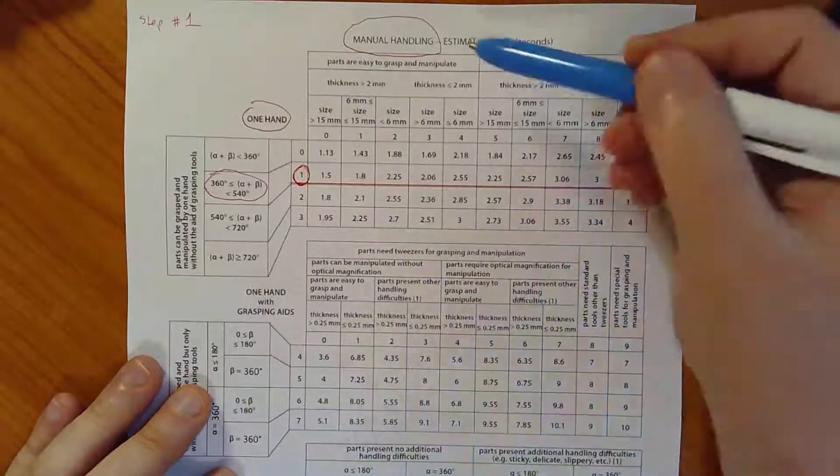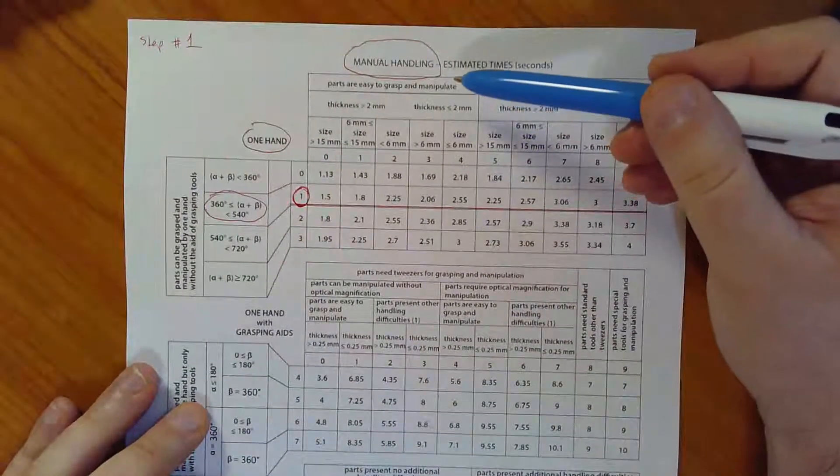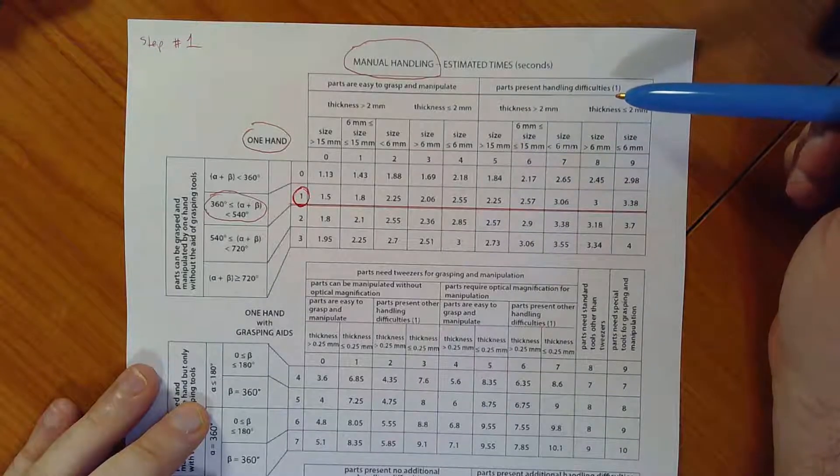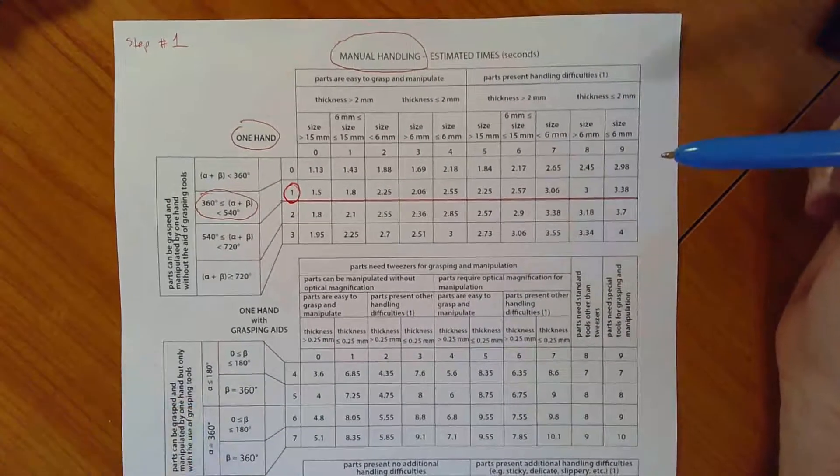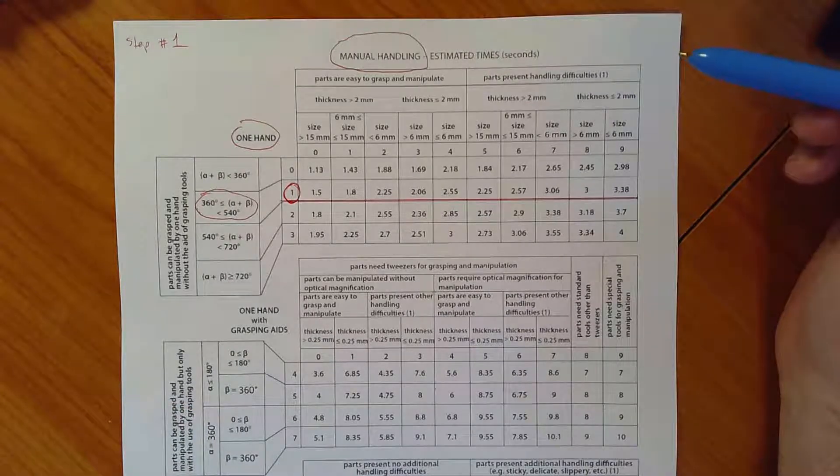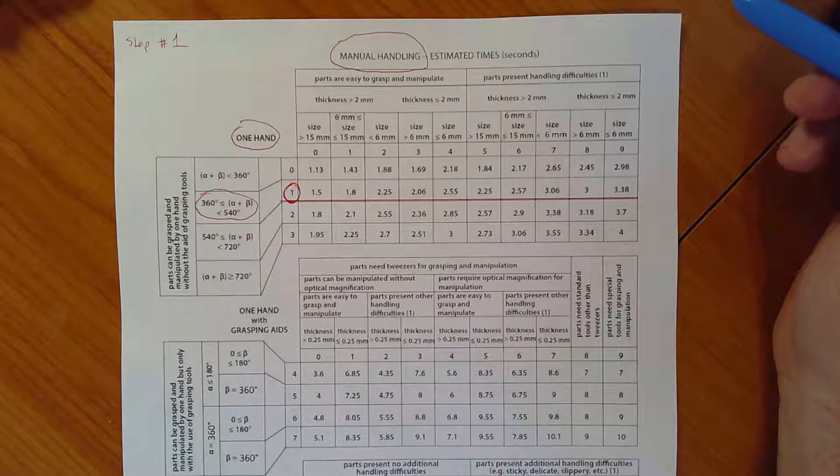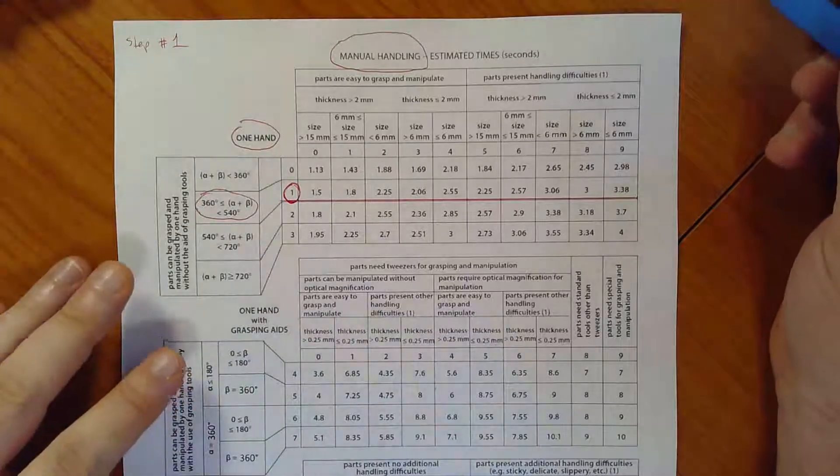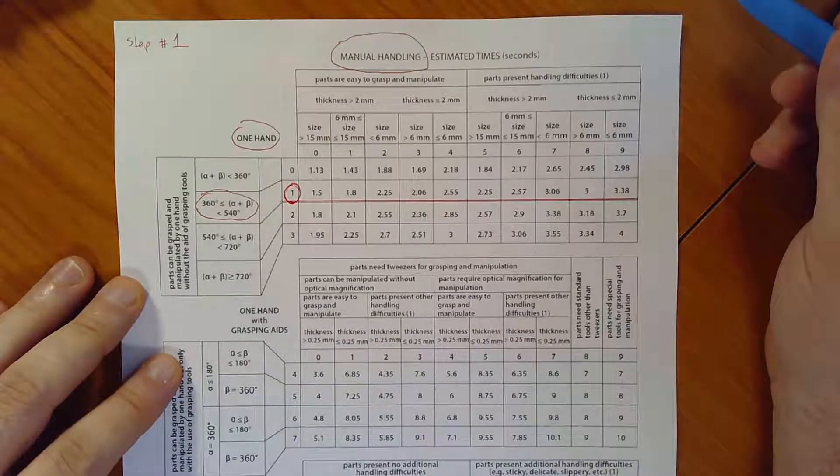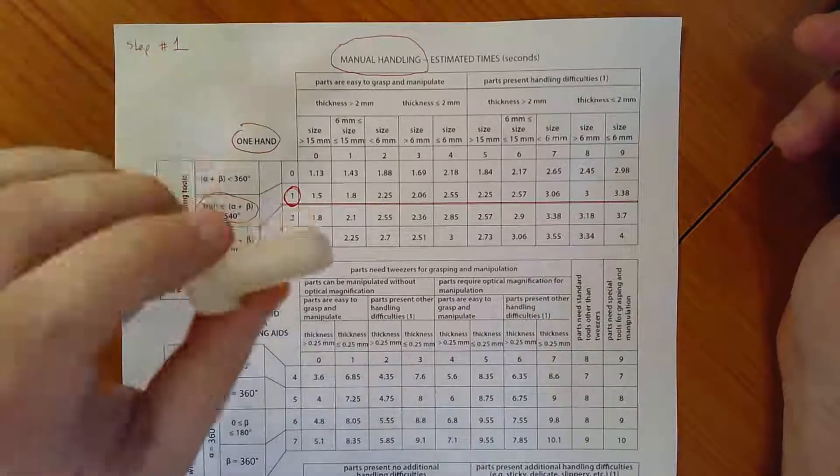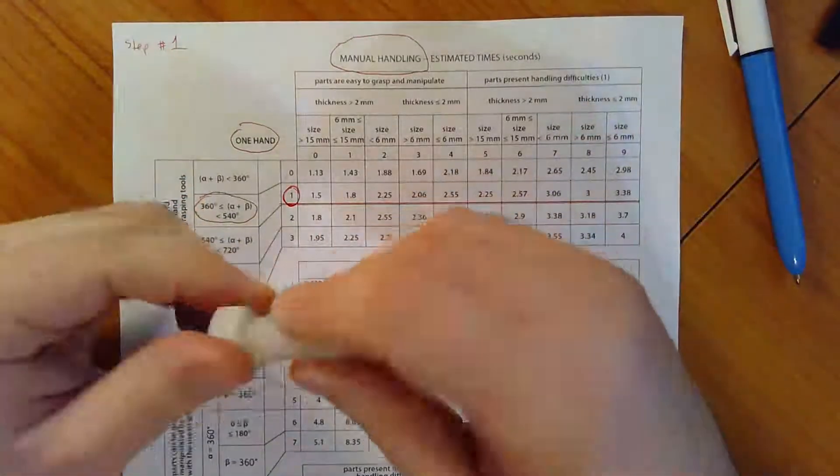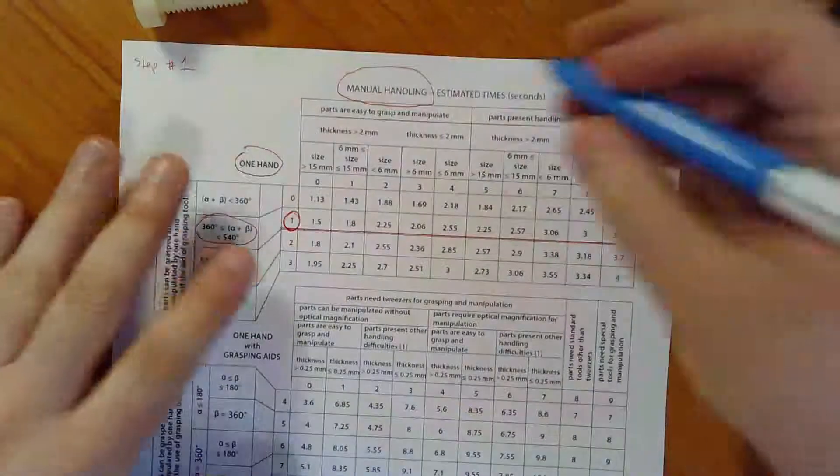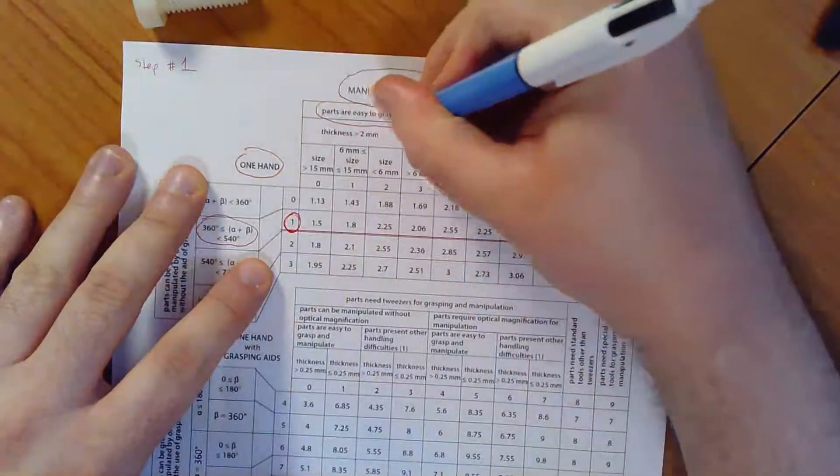360 is equal to alpha plus beta. And that gives me the first number in my two number handling code for this first step of the process, which is the number one. The next thing that I need to figure out is where I am in terms of the column. So I'm going to be somewhere along that row and I need to find the associated column that lines up with that row. The way that I find it is I start reading down from the top. So my first option is are parts easy to grasp and manipulate or do the parts present handling difficulties? Parts that present handling difficulties are parts that are slippery, sharp, hot, dangerous to handle in some way and would cause the assembler to exercise additional care in trying to pick up the part so as not to drop it or injure him or herself. I could pick this up without hurting myself. It's nylon. So there isn't even any danger of me accidentally cutting myself on the threads. So this is definitely a part that's easy to grasp and manipulate.